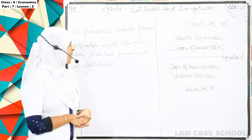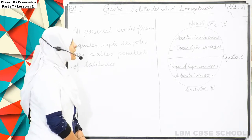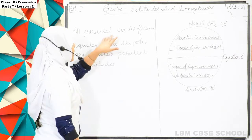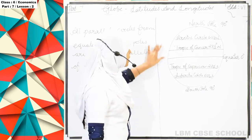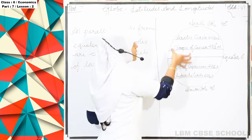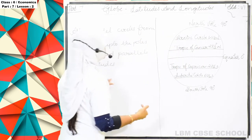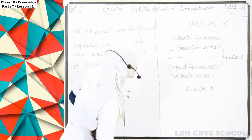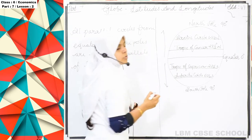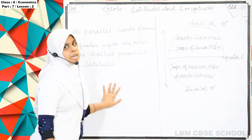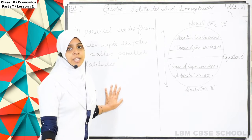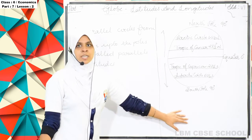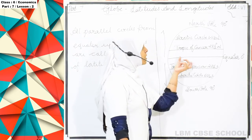Now we will study what is latitude. All parallel circles from the equator up to the poles are called the parallels of latitude. These imaginary lines are called latitudes. All the lines that we study for our convenience are imaginary lines.